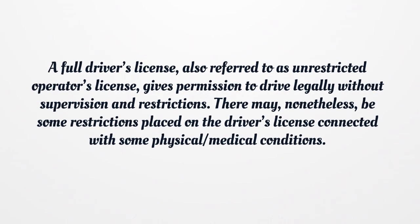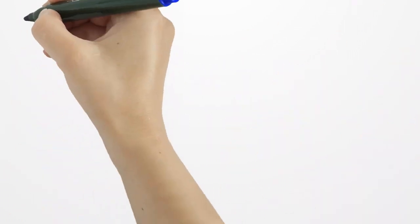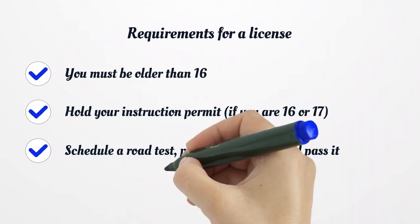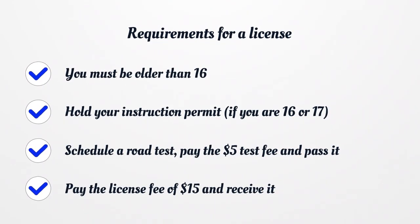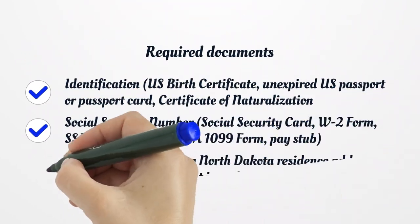A full driver's license, also referred to as an unrestricted operator's license, gives permission to drive legally without supervision and restrictions. There may nonetheless be some restrictions placed on the driver's license connected with certain physical or medical conditions. Requirements include: you must be older than 16, hold your instruction permit, schedule a road test, pay the $5 test fee and pass it, then pay the license fee of $15 and receive it.